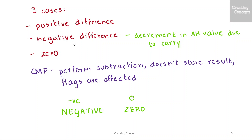In the subtraction we'll be considering three cases where the difference is positive, negative, and zero. In case of negative difference, note that we need to take into consideration the value of the AH register also. To know the behavior of the difference, I'll be using the instruction CMP, which performs subtraction but doesn't store the result. However, flag bits will be affected based on the type of result.